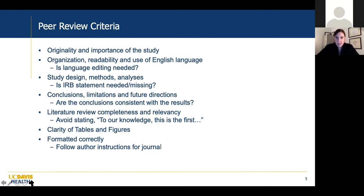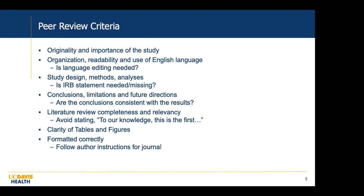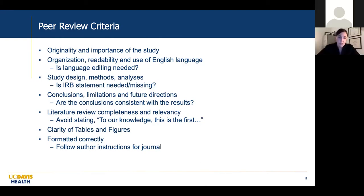Reviewers are also asked about study design, methods, and analyses — and it's really important that the IRB statement is included. Then conclusions, limitations, and future directions. The main hang-up is primarily: are the authors making conclusions that aren't supported by the results, or overstating their results? It's easy to get excited about your study and perhaps overstate the findings; that just needs to be dialed back a bit to avoid publishing something with a very strong recommendation when perhaps the methods weren't — well, you can't always do randomized controlled trials. Also, literature review completeness and relevancy.